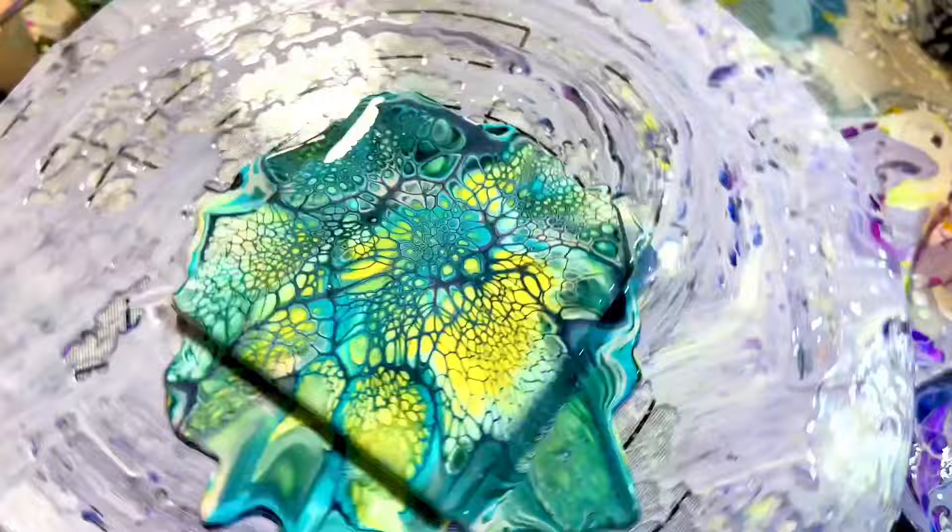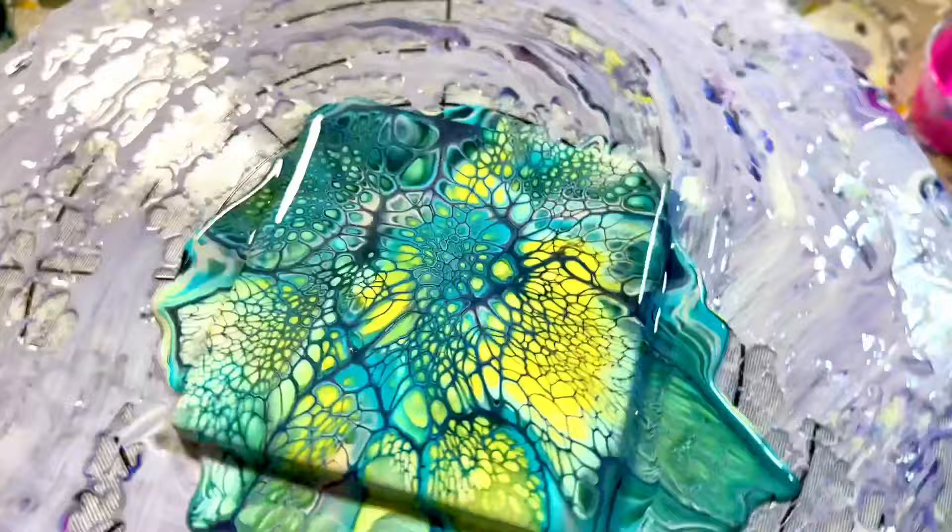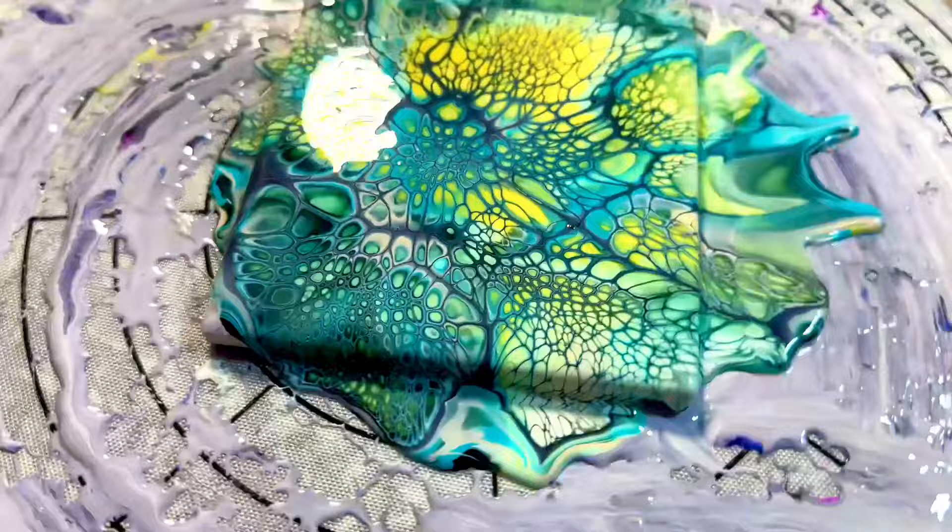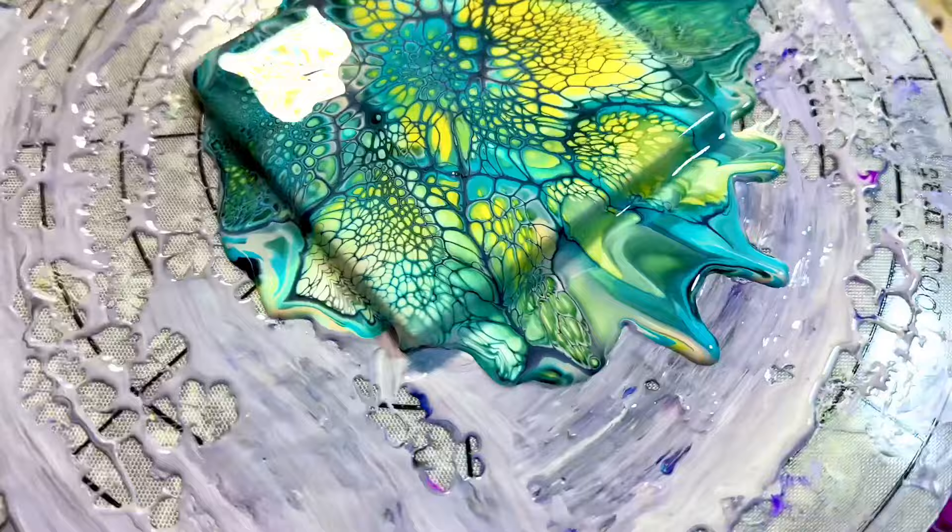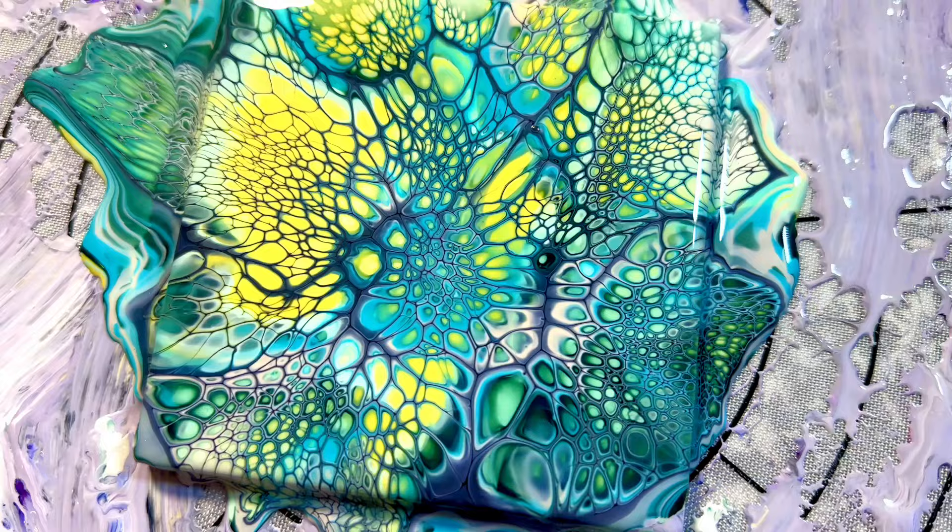So again, the trick to layering with opaques to get peacock cells, by the way if you don't know peacock cells are when the paint surrounds the cell and makes a really nice outline, is to layer your opaques properly. Again, you can start with an opaque, that won't really do anything for you. You can put one in the middle and it will create something nice, or you can be really brave and then put one in the middle and on top to see what you get.